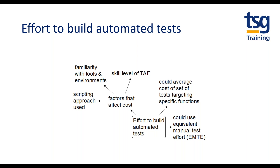The effort to build automated tests needs to be monitored. One way to do this is to use the equivalent manual test effort — EMTE. This is where you compare what takes the most effort: test execution for manual testing, and test creation for automated testing. So if it takes an hour to execute a manual script and three hours to create the same automated script, when the automated script has been run three times it has broken even. The build cost is three times EMTE.